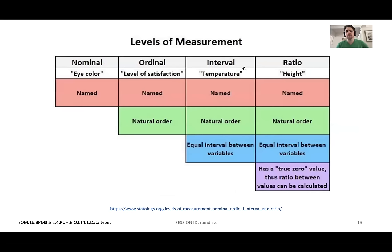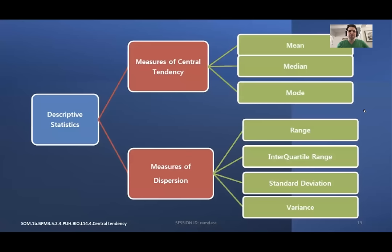Being able to break it down in case they give you an example such as height or temperature — just knowing which one falls in each category. As you go from left to right, they become more detailed: nominal being just a color, and you get more information through ratio, which has a true zero value.